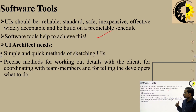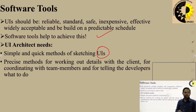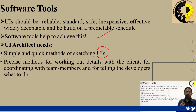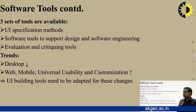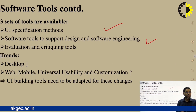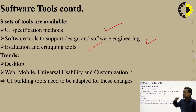What does a UI architect need? From the user's point of view: a simple and quick method of sketching the UI; a precise method for working out details with the client or coordinating with team members; and for telling developers what to do. Three sets of tools are available: UI specification method, software tools to support design and software engineering, and evaluation and critiquing tools.